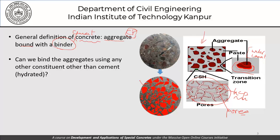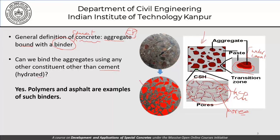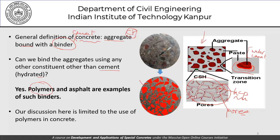The question we want to ask is: can we bind the aggregates together using any other constituent than cement — or rather, the hydration products of cement? The answer is yes — polymers. Asphalt is also an example, but today we concentrate on polymers; we leave the asphalt concrete discussion for another time. Our discussion is limited to the use of polymers in concrete, where this binder, which used to be hardened cement paste (HCP), will be replaced at least partly or fully by some kind of polymer.